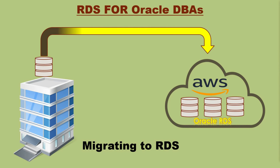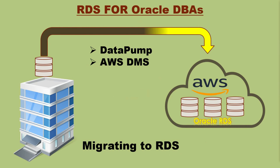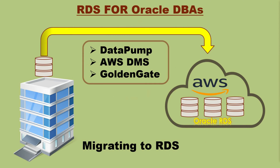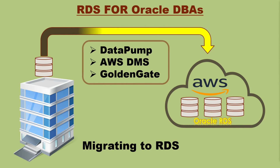Now let's discuss migrating an on-premises Oracle Database to RDS. There are multiple ways to do this: using Oracle Data Pump expdp/impdp commands, using the Data Migration Service or DMS provided by AWS, or using GoldenGate replication between on-premises and the RDS database instance. In this video we will demonstrate the simplest of all — migration using Data Pump export/import. We will discuss the other methods in future tutorials.